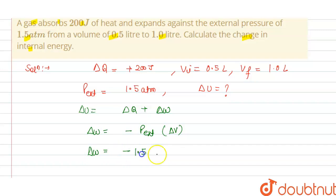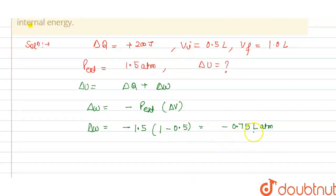This is minus 1.5 change in volume is 1 minus 0.5. So that is minus 0.75 liter atm. 1 liter atm is equal to 101.3 joule.